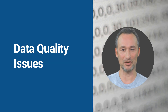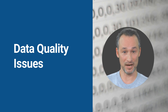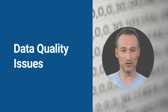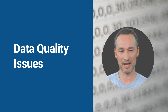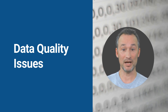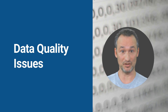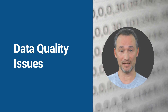Another use case for ChatGPT in data governance is identifying data quality issues. By analyzing unstructured data, such as customer feedback, social media comments, and emails, ChatGPT can identify inconsistencies, errors, and other issues that may impact data accuracy and integrity. This can help organizations improve their data quality, which is critical for effective decision-making.